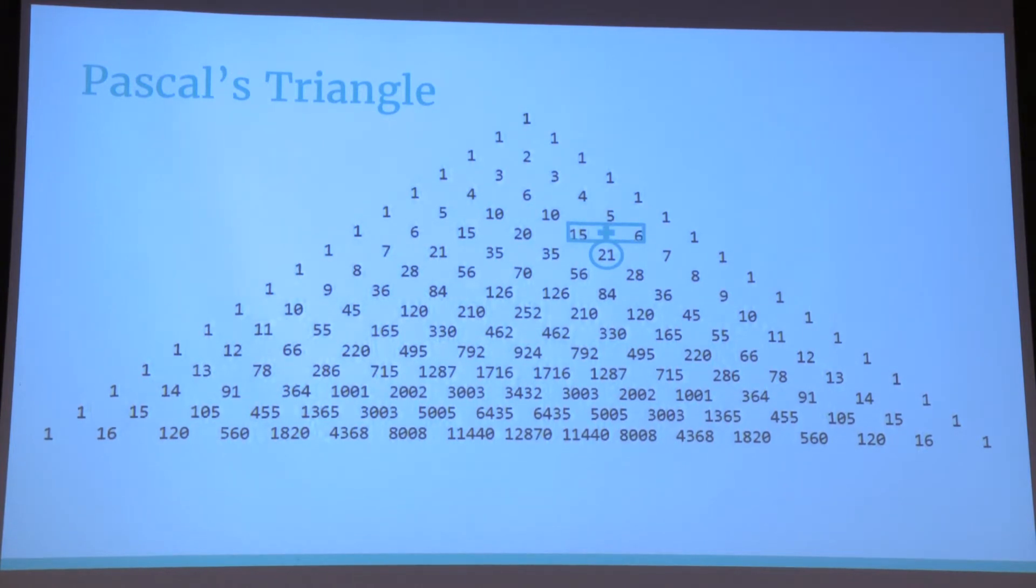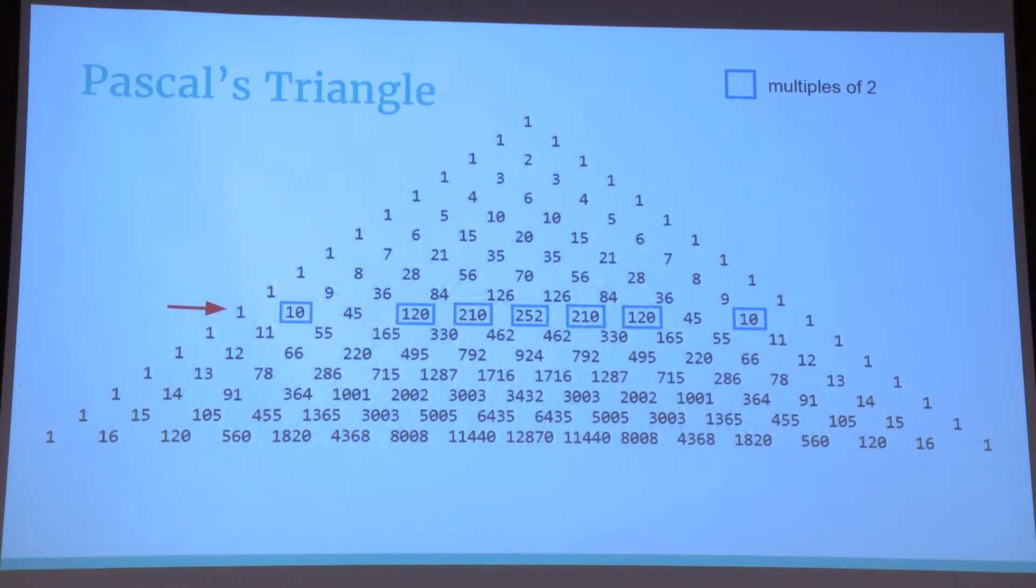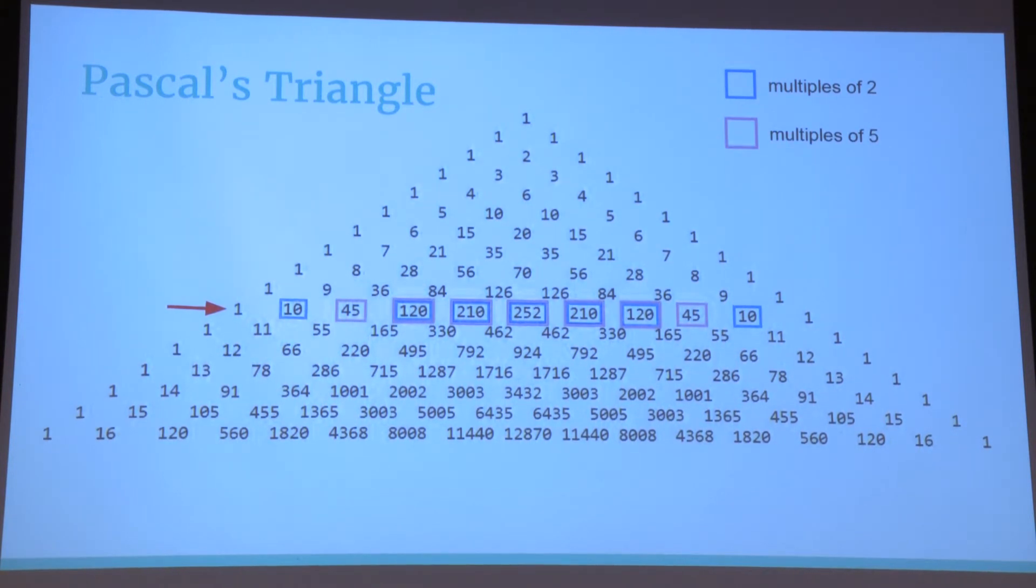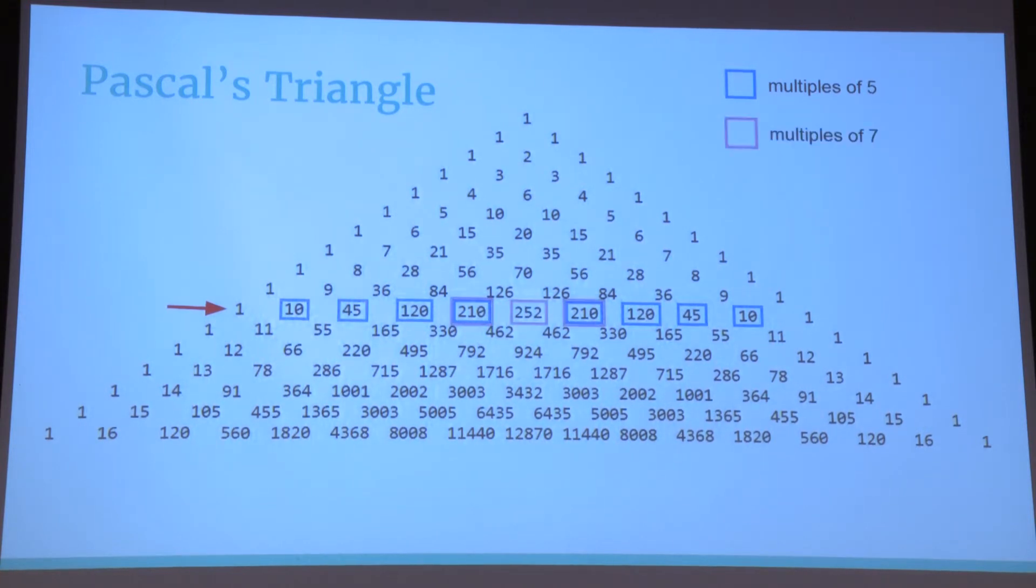Now, let's take any row of this Pascal's triangle, say the tenth row, and we paint with blue the multiples of 2, and we paint with pink the multiples of 5. You can see that omitting the trivial ones in the edge, we have colored all numbers in the row with either blue, pink, or both numbers.